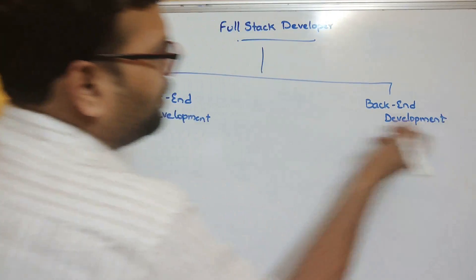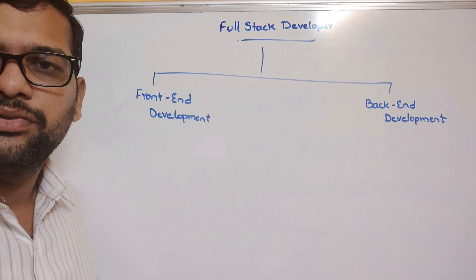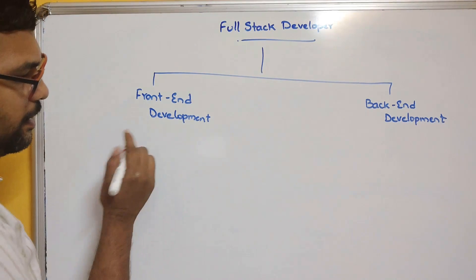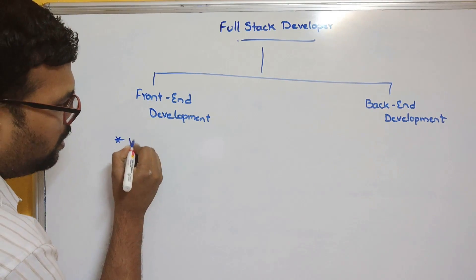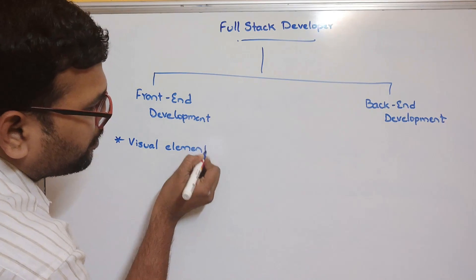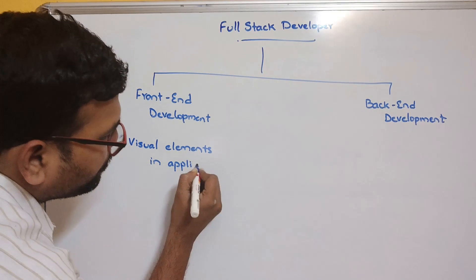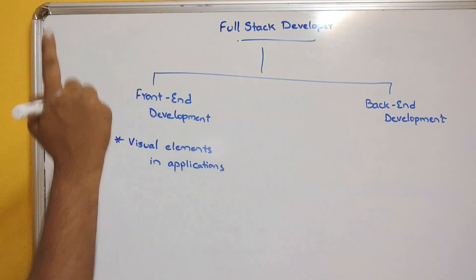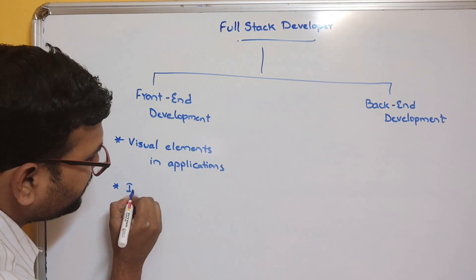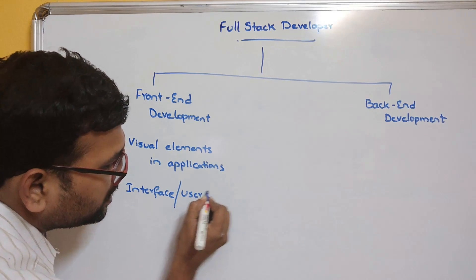What is front-end development and what is back-end development? If you create any application, there will be two things — a front-end and a back-end. The front-end covers all the visual elements in the application. This is also called the interface, or user interface.